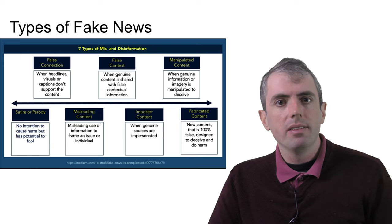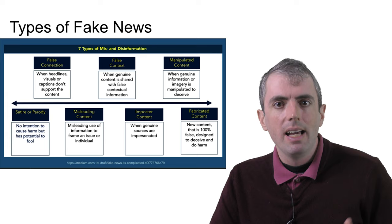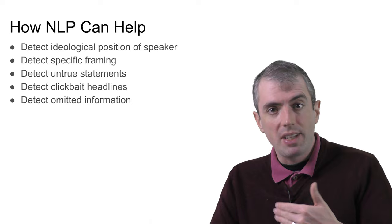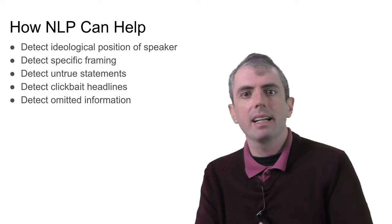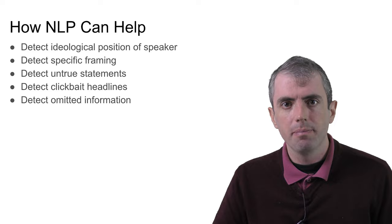NLP, though, can help in a number of ways—detecting when an author has a particular ideological stance, which can be detected by how they frame an issue, using 'death tax' for 'inheritance taxes', for example, or when information is presented partially or with clickbait headlines. But we're going to focus today on outright wrong statements.